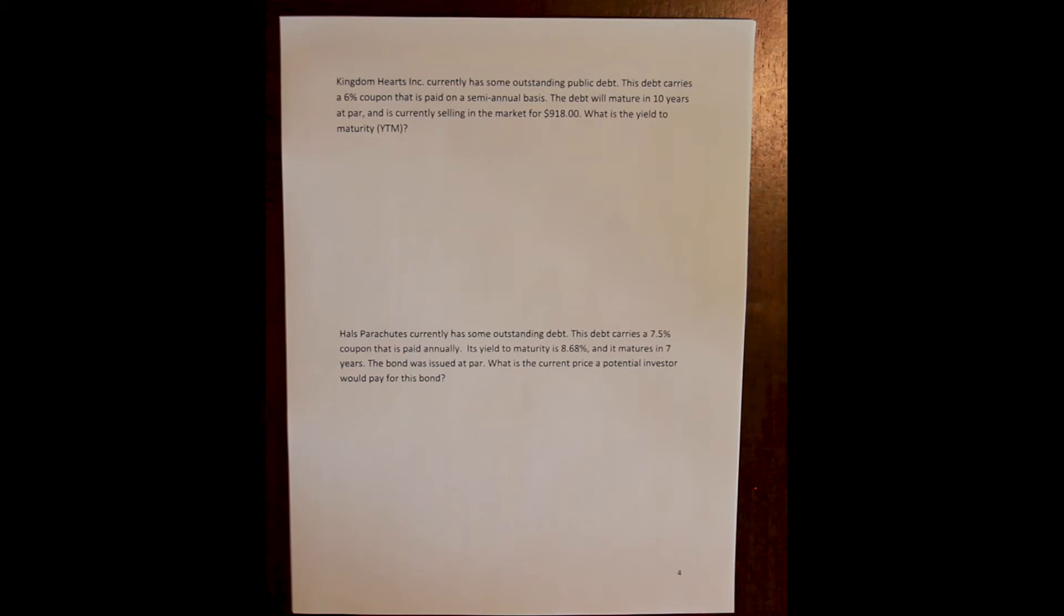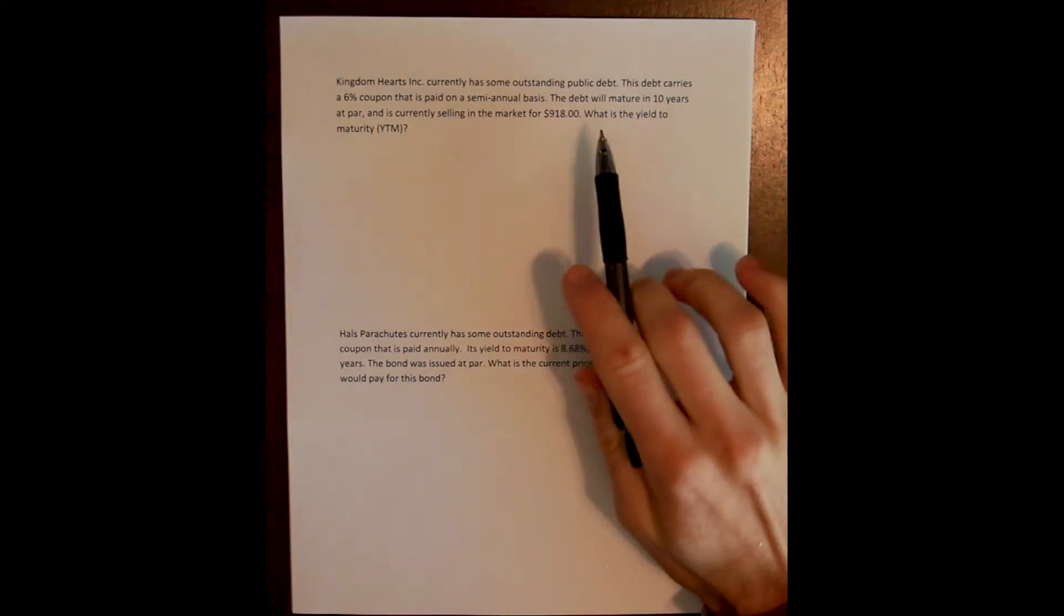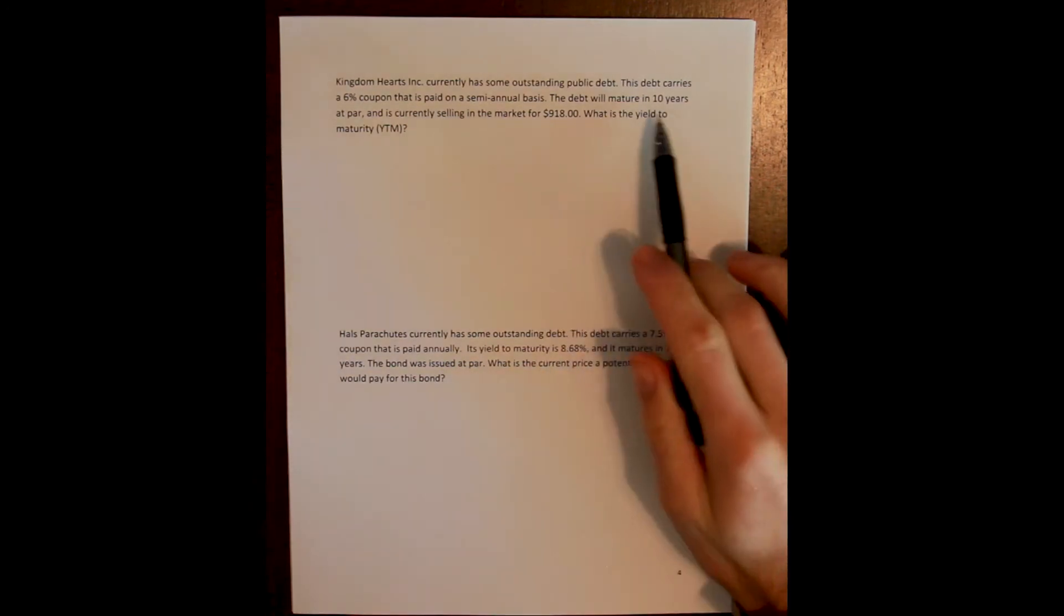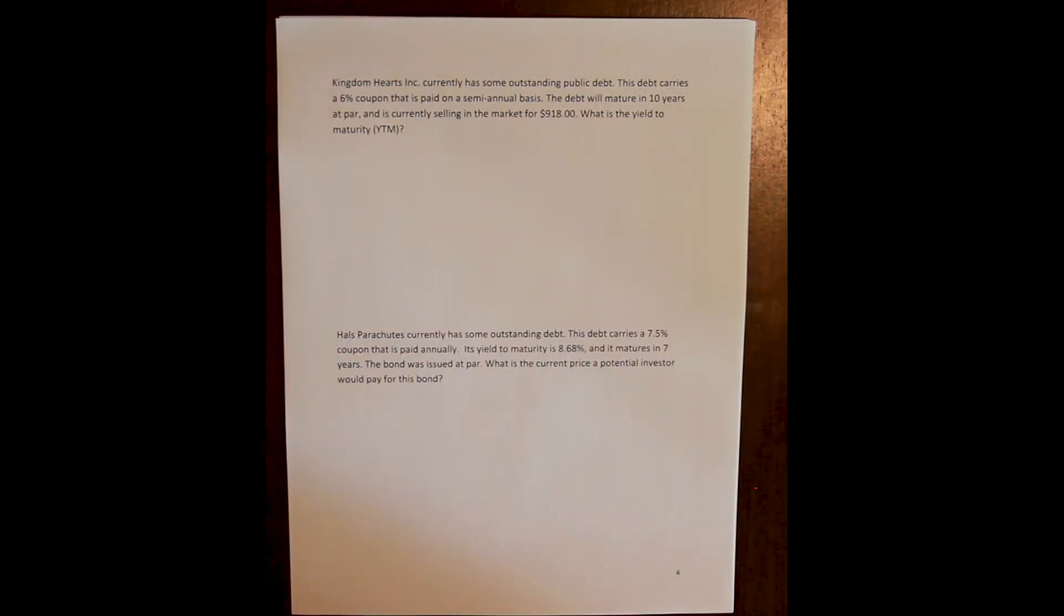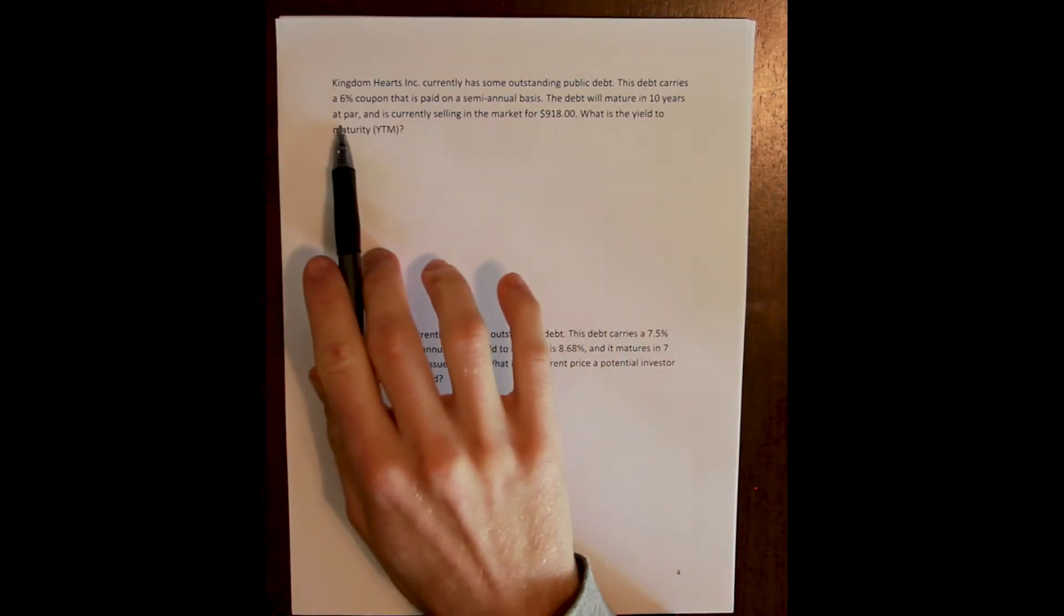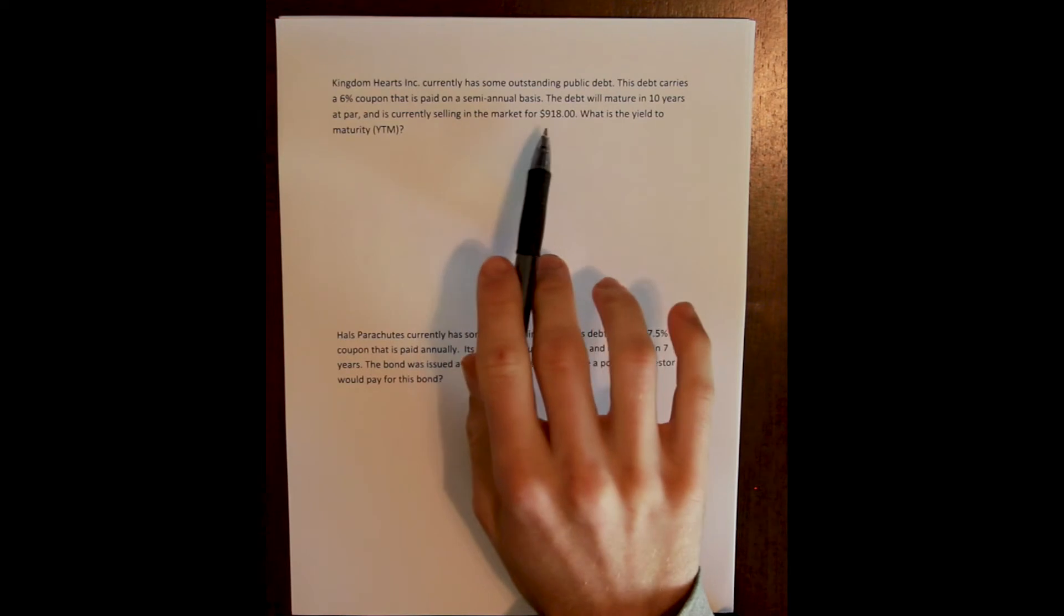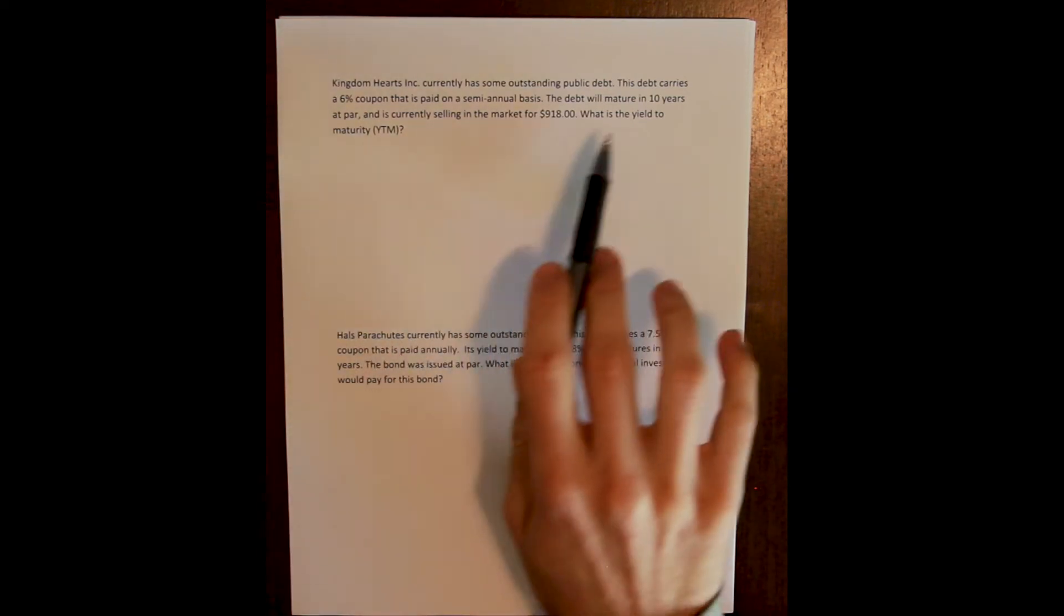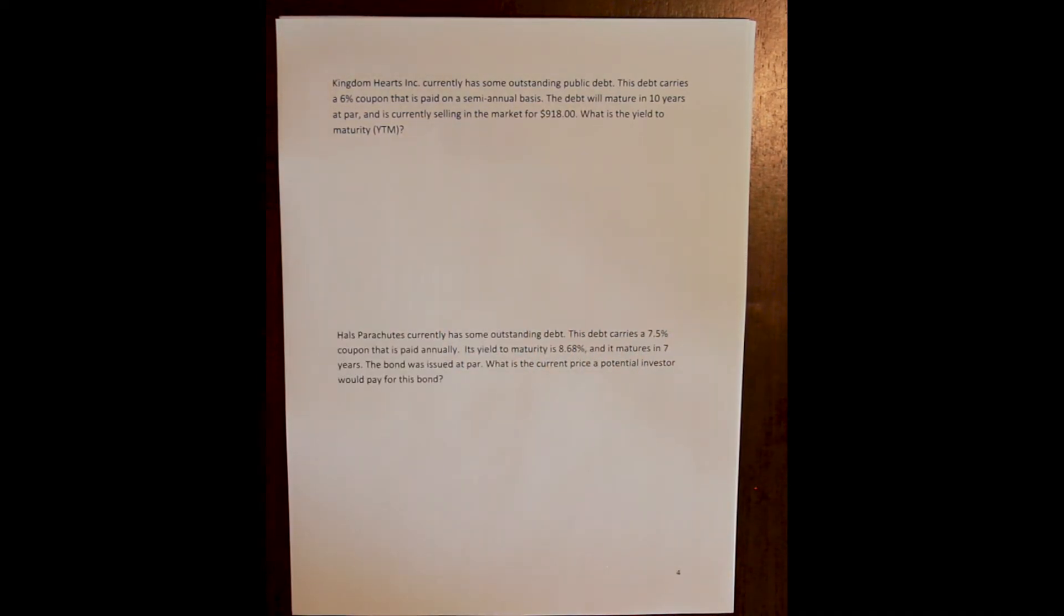So this first problem then says, Kingdom Hearts Inc. currently has some outstanding public debt, public debt meaning bonds. This debt carries a 6% coupon that's paid on a semi-annual basis. The debt will mature in 10 years at par and is currently selling in the market for $918. What is the yield to maturity?